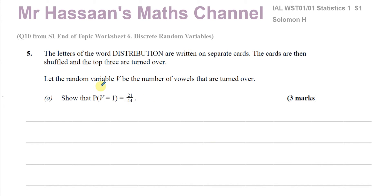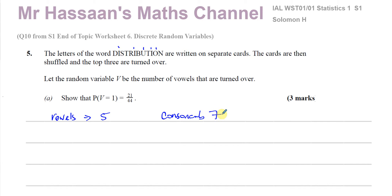We're talking about vowels — either vowels or consonants. The vowels in 'distribution' are I, O, and U. There are three I's, one O, and one U — so five vowels altogether. And there are seven consonants, because there are 12 letters in total. So 12 cards can be picked from.